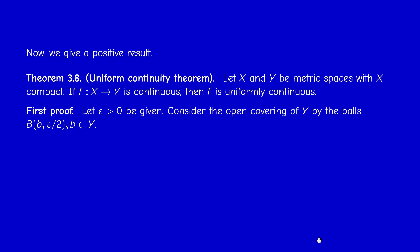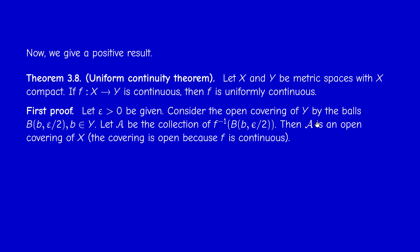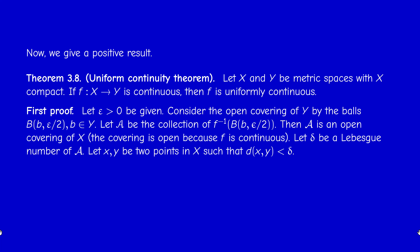Cover the space Y with balls of variable center b and radius epsilon over 2. The union of all these balls, as b varies in Y, is just Y. Since f is continuous and each ball is open, the inverse image is an open set, and it's easy to check that the union of all these inverse image sets equals X. Since X is compact, it has a Lebesgue number delta.